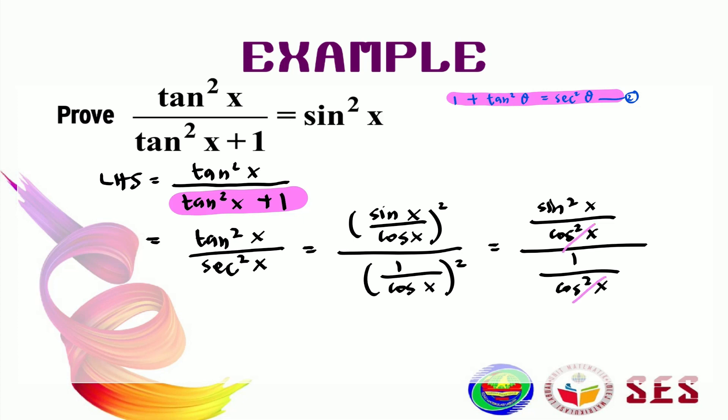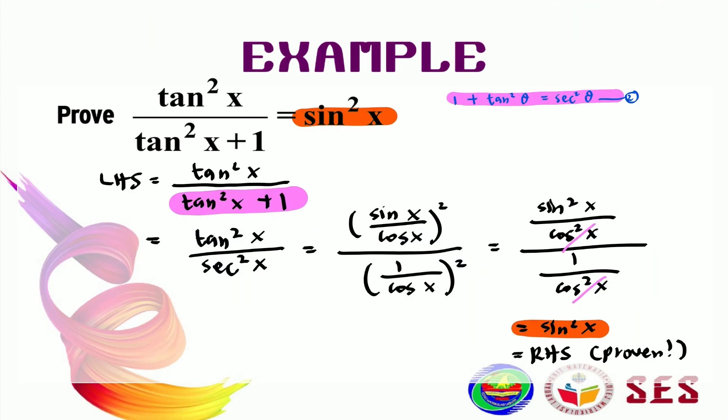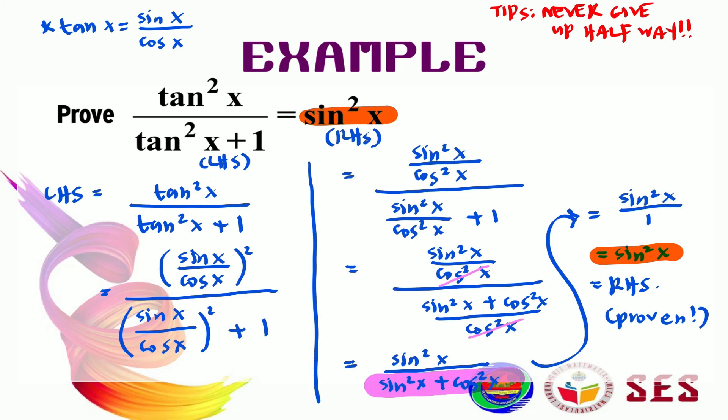And see, I can cancel this too and left with just sine squared x. And this is our right-hand side. Now, let's see the difference between this solution and this solution here. This solution here is a bit more shorter than this solution here. So, if you can recognize the identities earlier, it would be better and easier to prove.